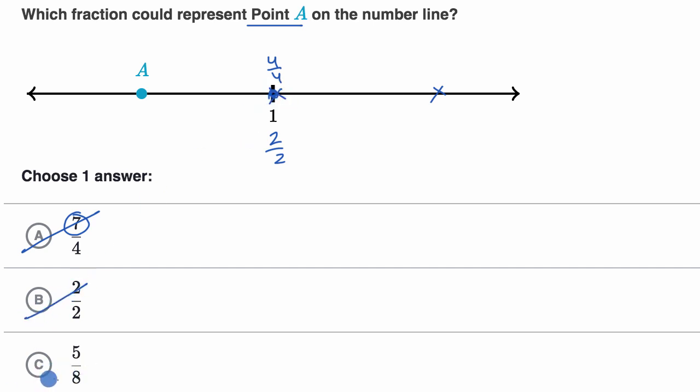What about five eighths? Well, five eighths, the numerator is less than the denominator. Eight eighths is equal to one, so that's that point again. So five eighths would be to the left of that. So that could be point A. So I like that choice.